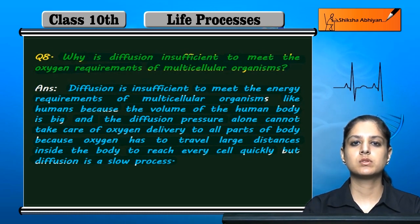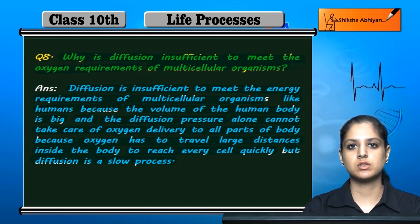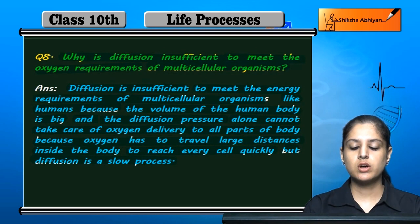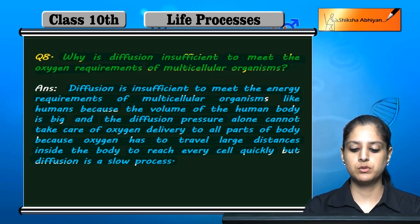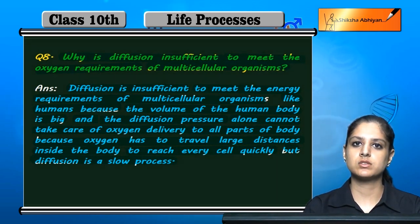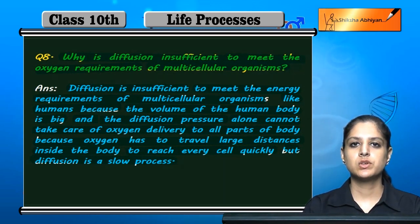The human body needs oxygen to reach quickly, but diffusion is a slow process. So oxygen is necessary to reach quickly, but diffusion cannot meet this requirement for multicellular organisms.